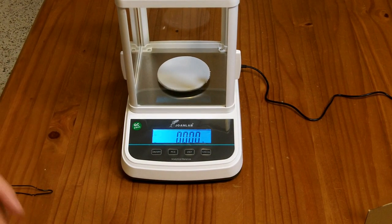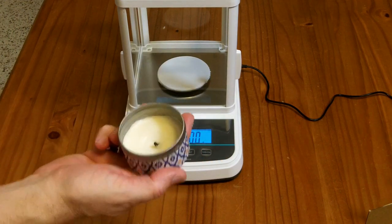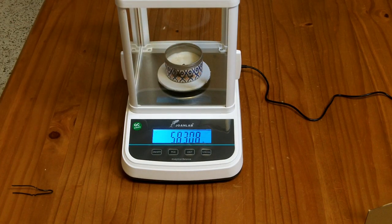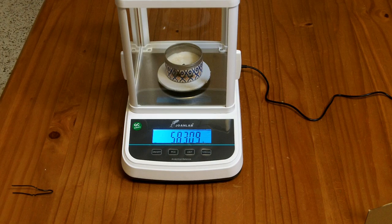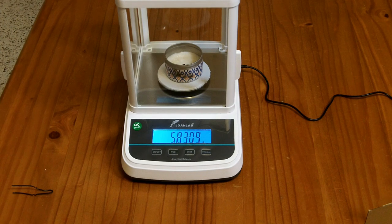So to demonstrate the accuracy of a thousandth of a gram balance, I have here a standard candle. We're going to place the candle in there. And it weighs, currently, 58.309 grams.